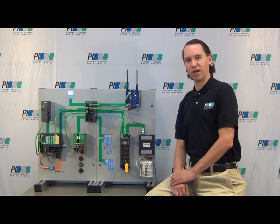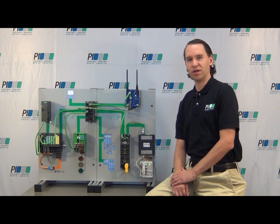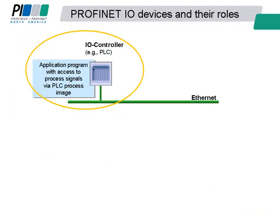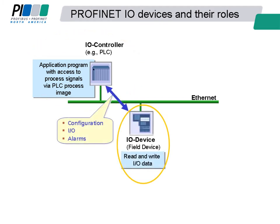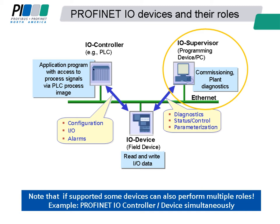When discussing Profinet, there are three main device roles depending on the device's function. The Profinet I.O. controller communicates to the I.O. devices as the controller of those devices, writes the process outputs, and has the main user program. Profinet I.O. devices send the process signals to the controller, such as inputs or diagnostic messages. I.O. supervisors can obtain status and control information from the devices and parameterize the system. Note that if supported, some devices can also perform multiple roles — for example, a Profinet I.O. controller and device simultaneously.